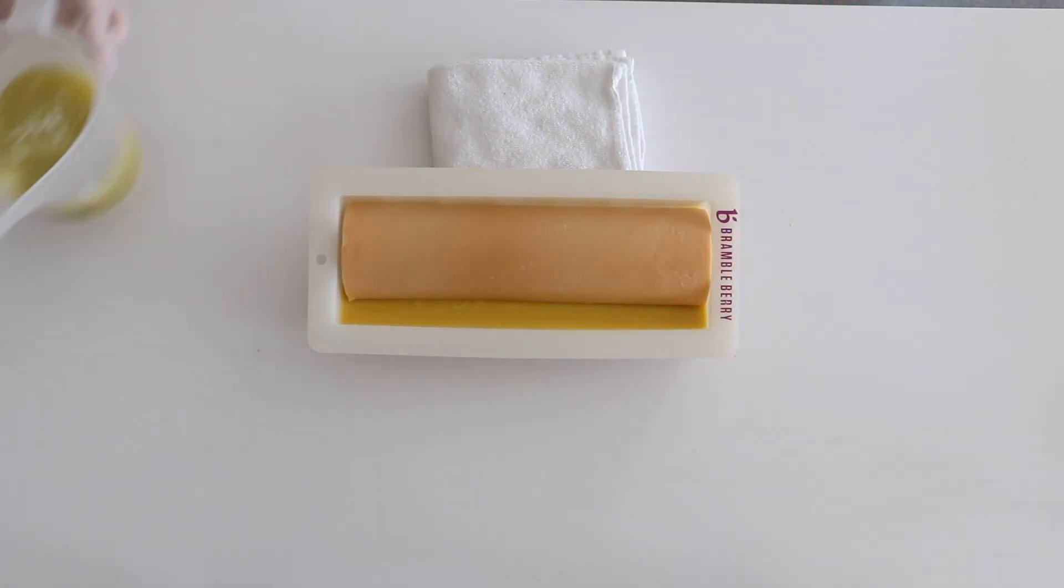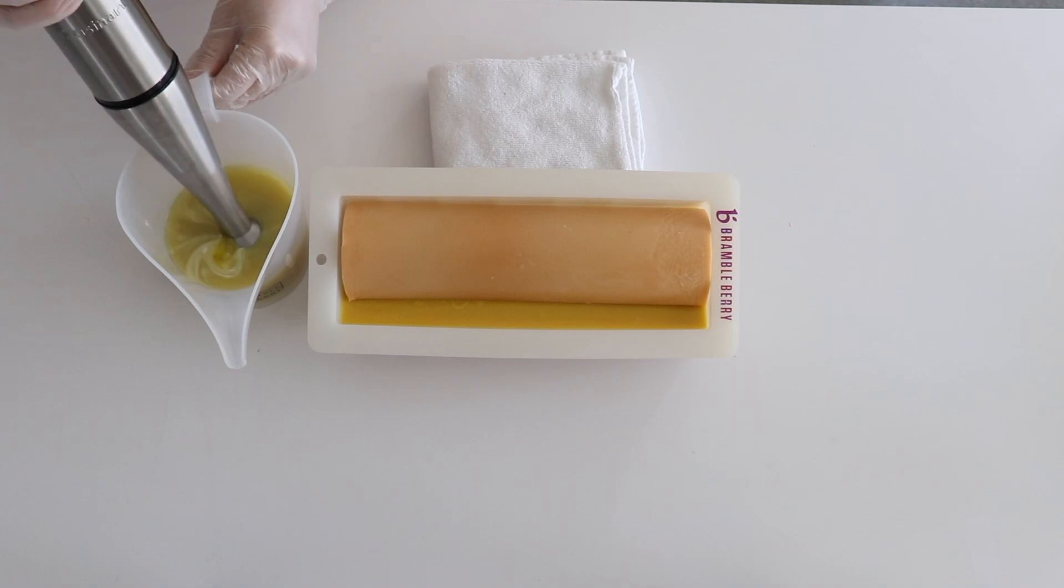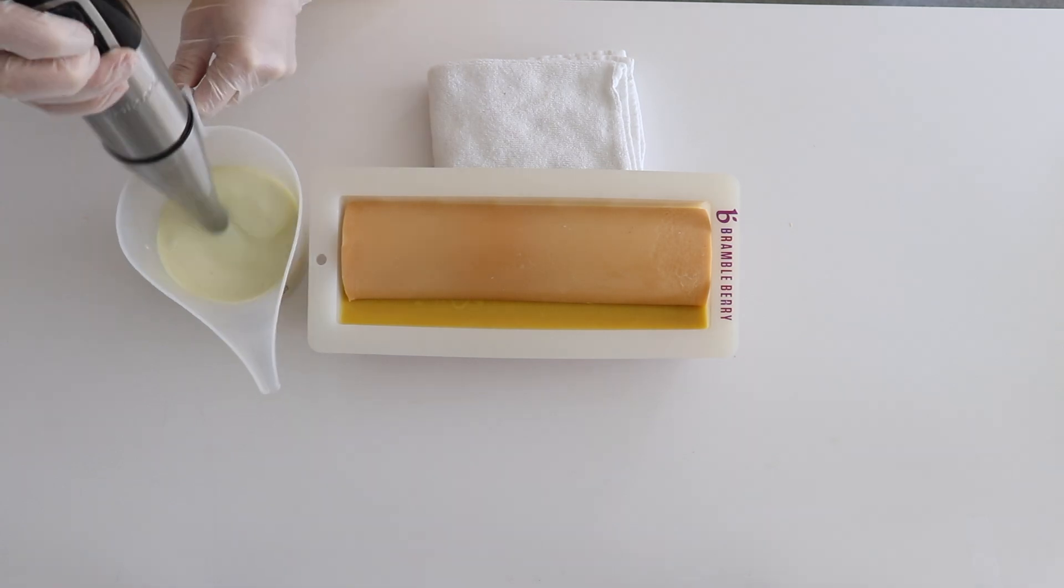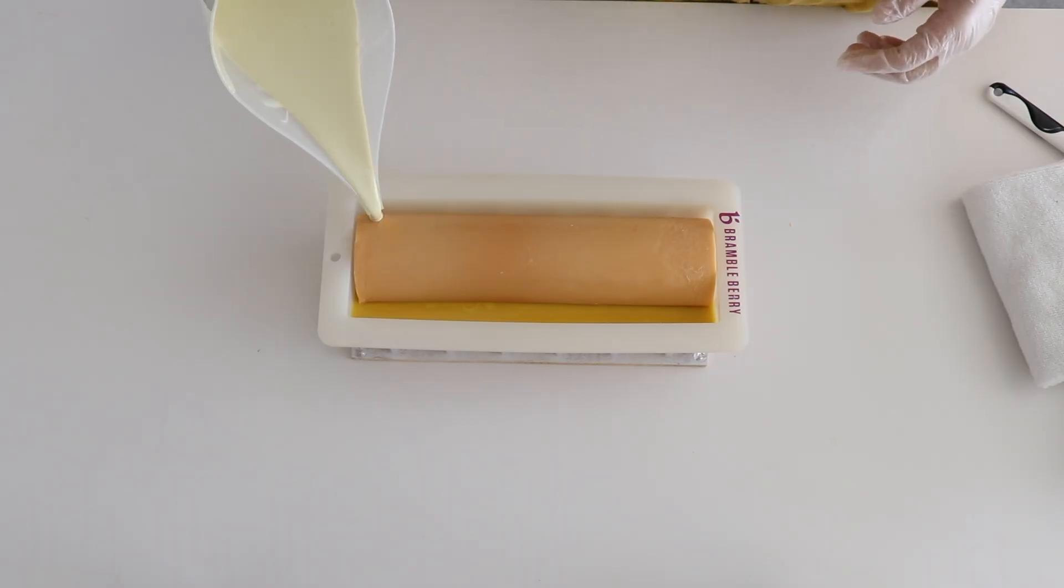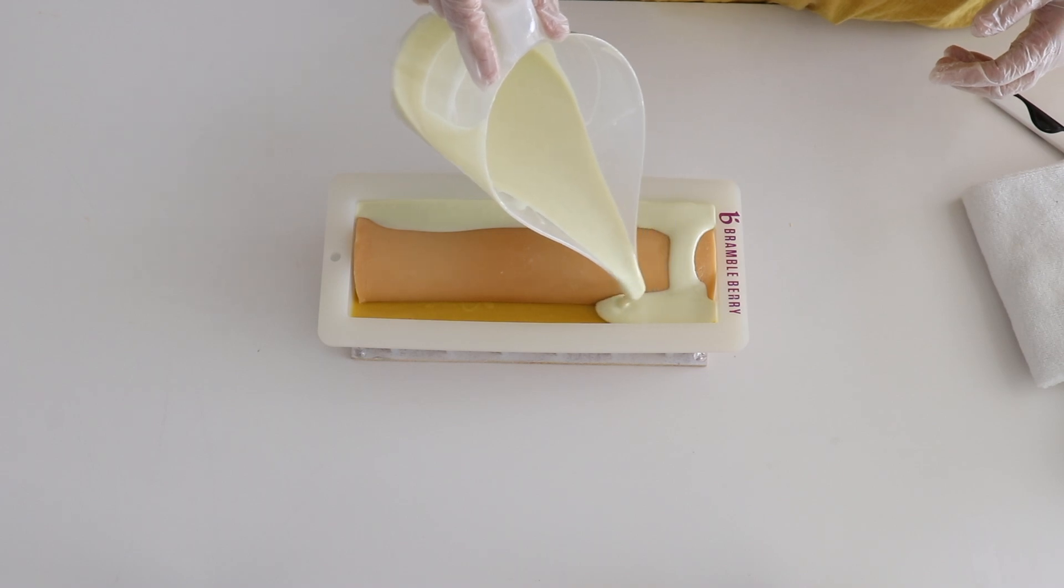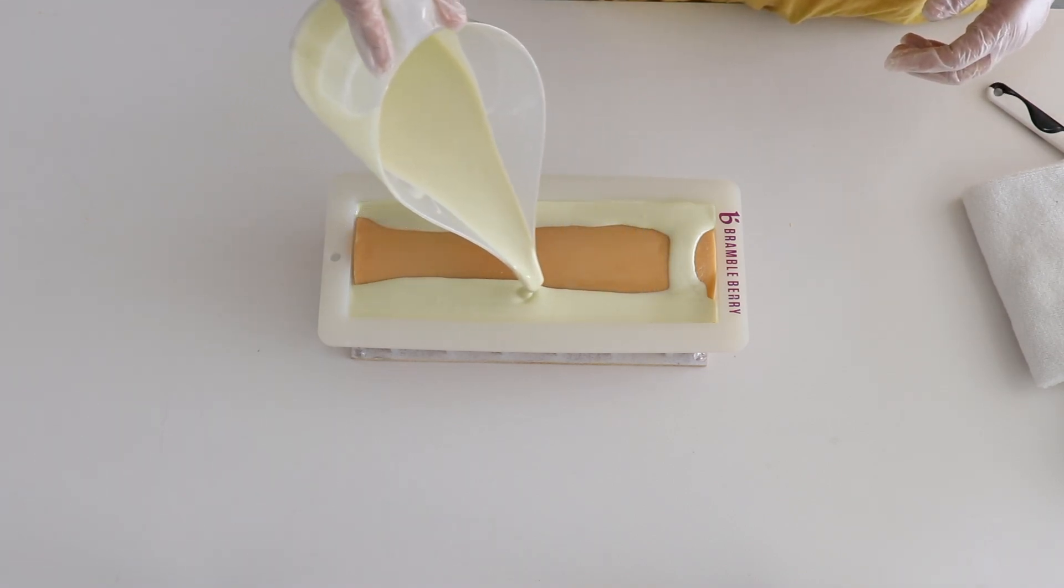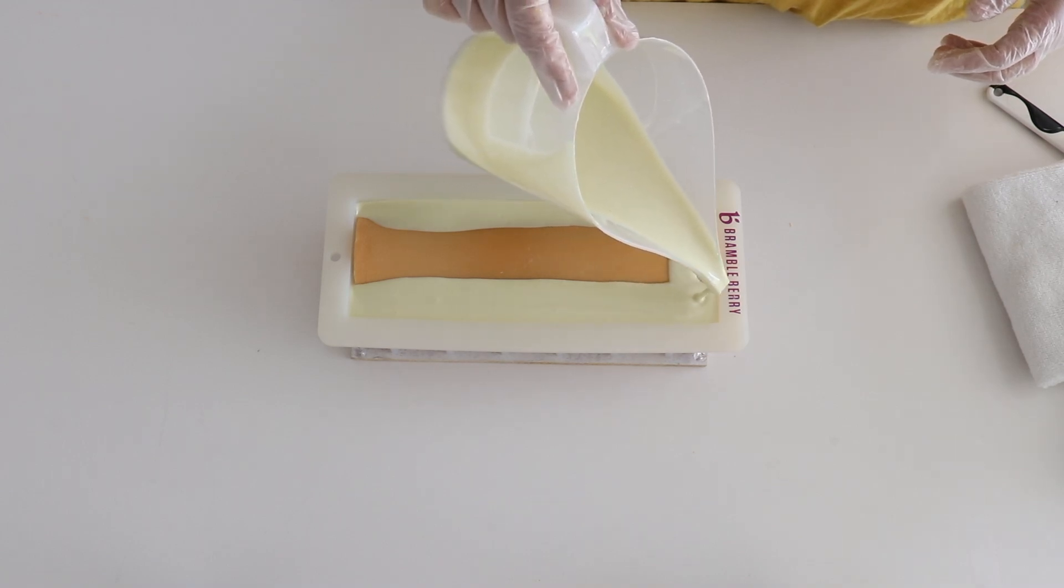And then lastly I'll take the last pitcher with the white and I'll add my fragrance and mix that up, and then take the towel out and fill in all the gaps. I like to wait for this soap to set up a little bit thicker so that I can texturize the top.